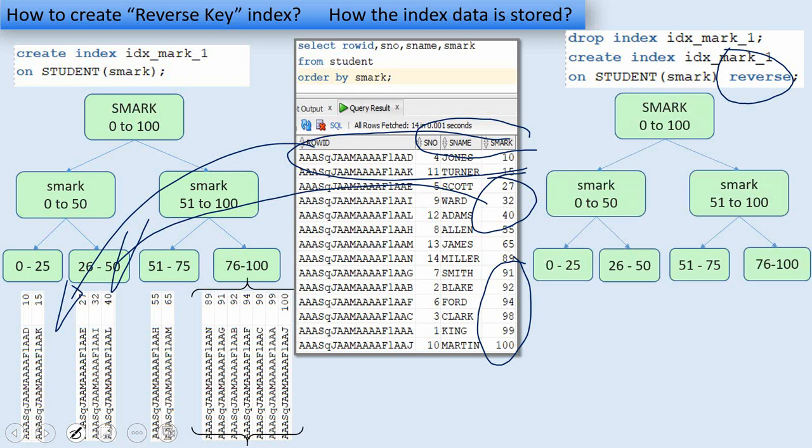the index key will be actually reversed and stored in the index segment. For example, the 100 in this case will be reversed, the reverse of 100 is nothing but 001 and it will be stored here. You can see here, this particular row ID will be stored here.